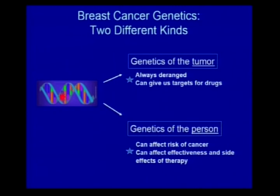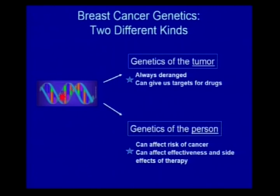There are two kinds of genetics, and they're different. The first is the genetics of the tumor. All cancers have abnormal DNA — that's one of the characteristics of being cancerous, and that's often where our targetability comes from. There's also the genetics of the person: BRCA1 and 2, now PALB2, and others. These can affect your risk of getting cancer, how the cancer behaves, and the effectiveness and side effects of therapy.